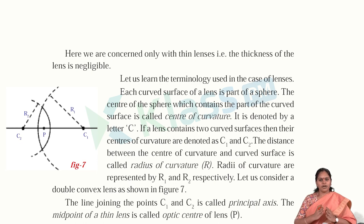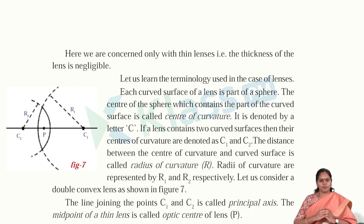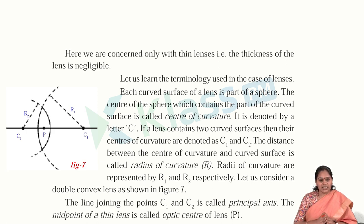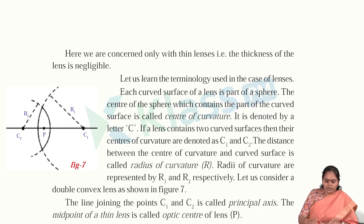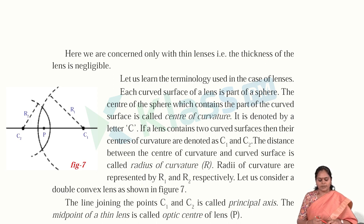The important thing to note is that we need to concentrate only on thin lenses, where the thickness of the lens is negligible. We consider how the thinness impacts the object — when we see through that lens, how the object will look. Let us learn the terminology used with thin lenses: center of curvature, radius of curvature, and optic center.